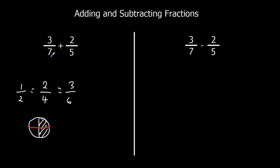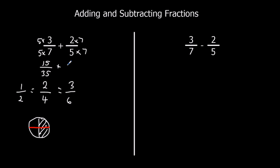So what we need to do is make the bottom numbers the same. We need a number that's in the 7 times table and in the 5 times table to do this. If we times this one by 5 — top and bottom, so the fraction stays the same — and we times this one by 7 — top and bottom, so the fraction remains the same — both the bottom numbers are going to be 35. And that's what we want: a common denominator, the same thing on the bottom. So 5 times 3 is 15 over 35, and 7 times 2 is 14 over 35.